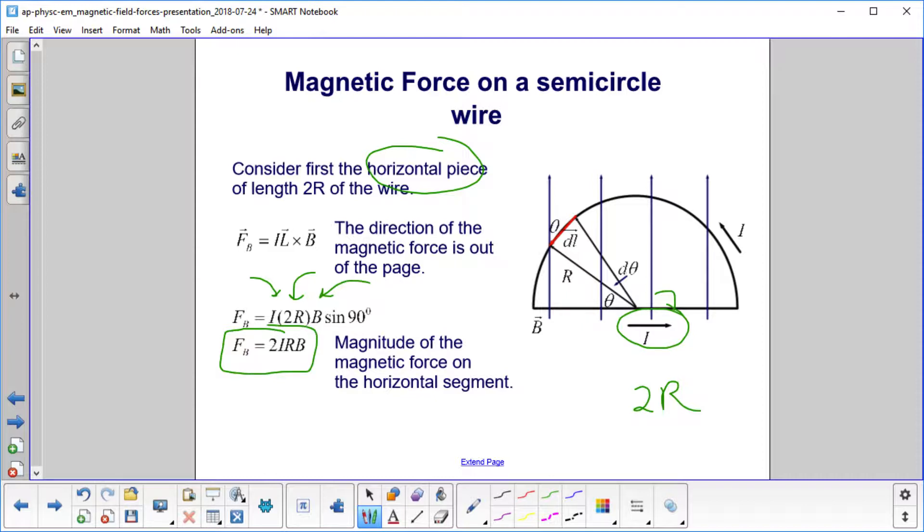So that's the magnitude of the magnetic force on the horizontal segment, and the direction of the force is out of the page.